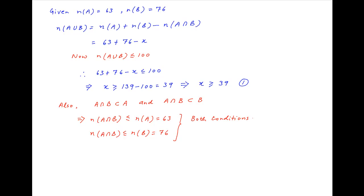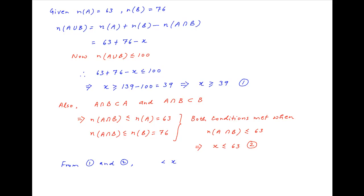Both of these conditions are met, and the number of people in set A intersection B is less than or equal to 63, so x is less than or equal to 63. Let's call this Condition 2. From Conditions 1 and 2, we conclude that the value of x is greater than or equal to 39 and less than or equal to 63.